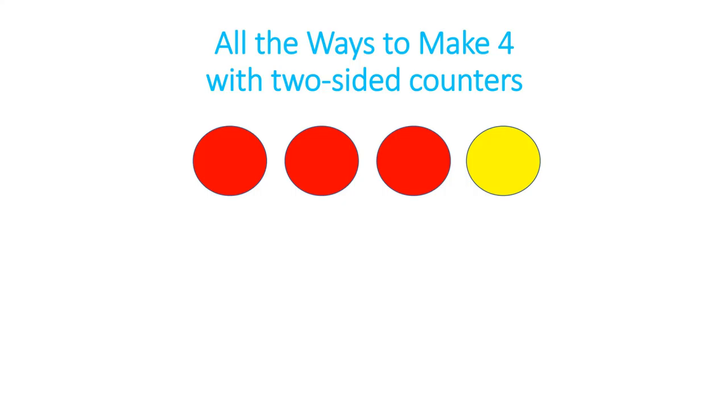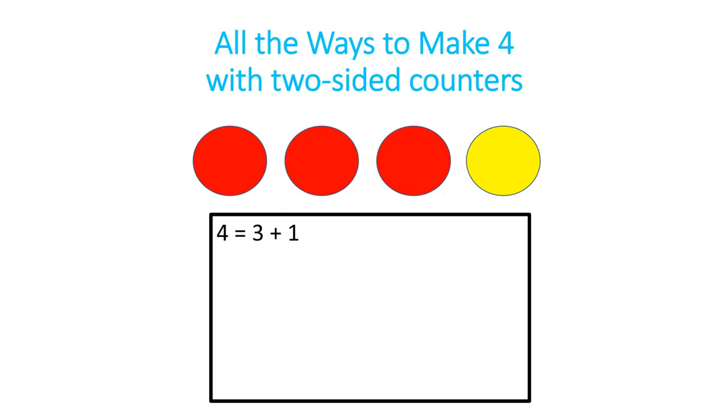Once you have them sorted, you can write on your whiteboard or a piece of paper the equation for the way that you just got four, because you started with four counters.